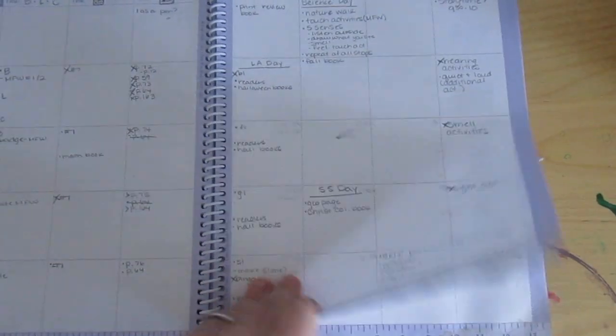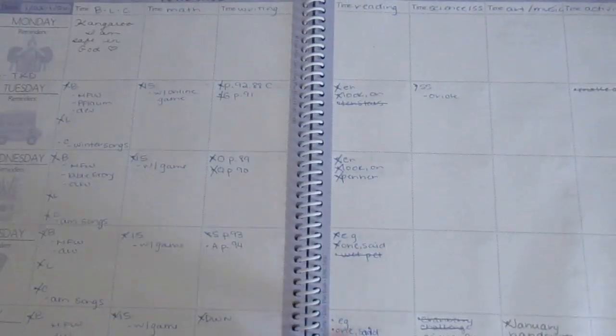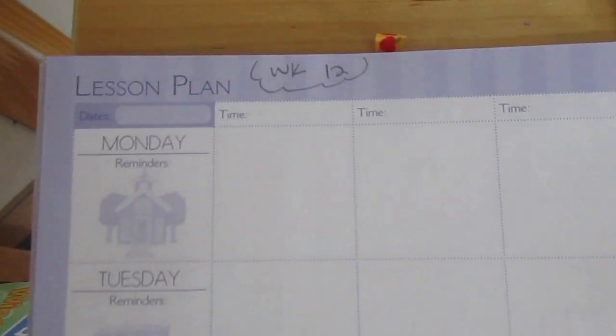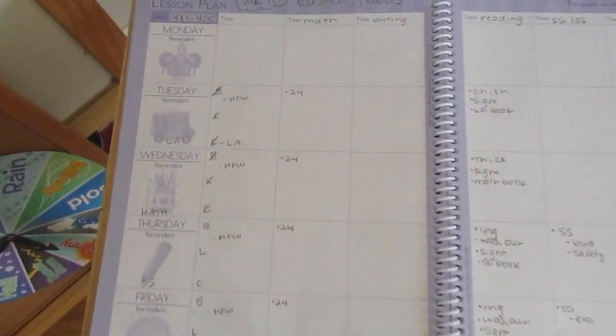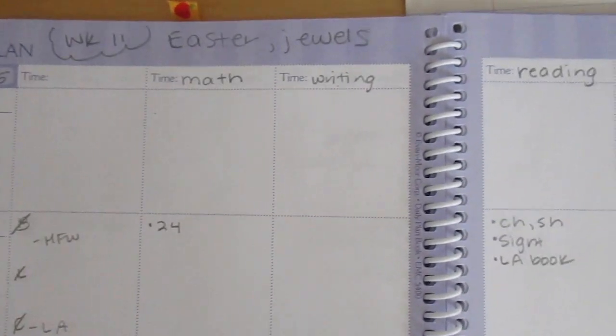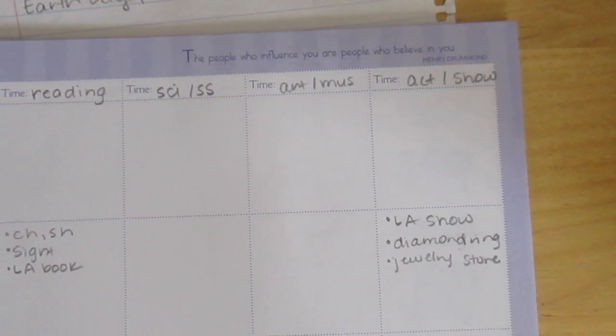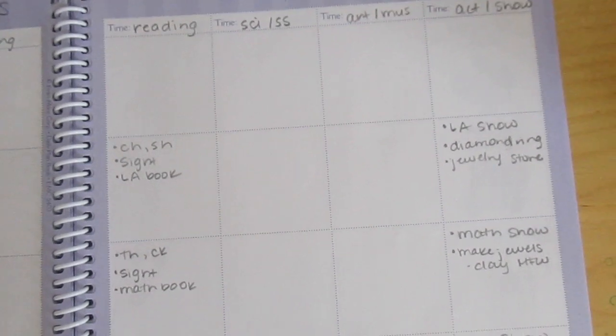We're going to keep going through all the weeks. We were just on week 11, so now is going to be week 12 of the second semester. I take a look at last week and see if there's anything I need to pull over from the previous week that I hadn't done. I break it up into categories: math, writing, reading, social studies, science, art and music, and then any activities provided by My Father's World or from anywhere else.